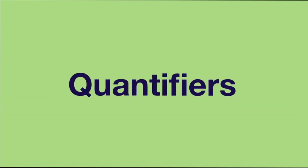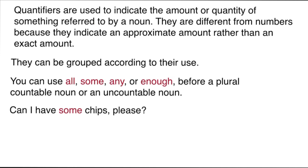Now let's move to quantifiers. Quantifiers are also determiners which modify a noun to indicate its quantity. Examples include: any, all, many, much, most, some, a lot, a little, a large amount, none. They are not cardinal numbers like one, two, three — cardinal numbers tell an exact count. Quantifiers do not tell an exact number; they express a general amount.